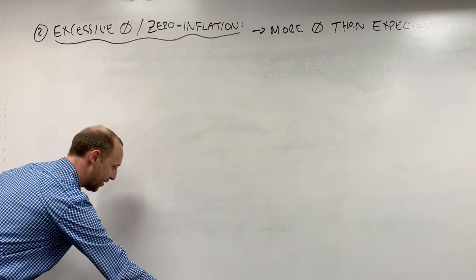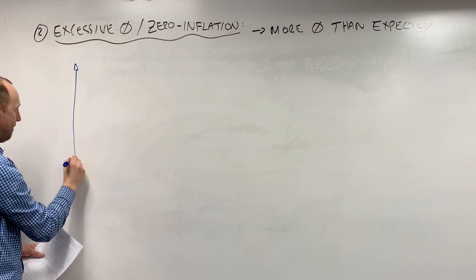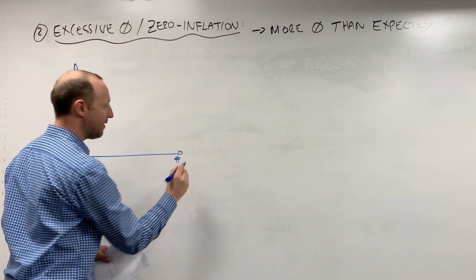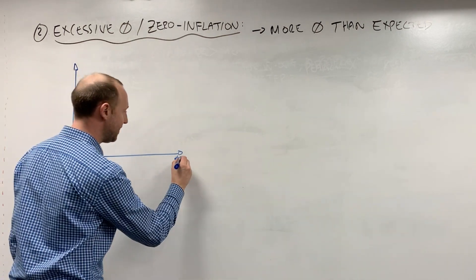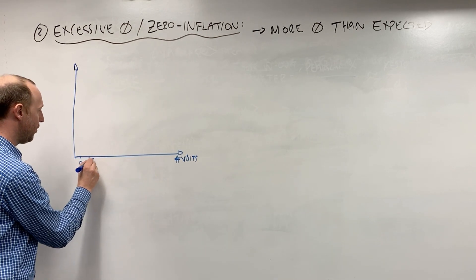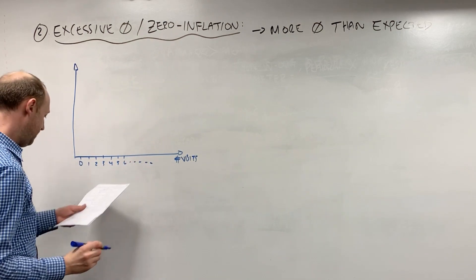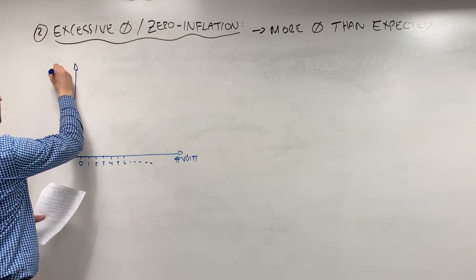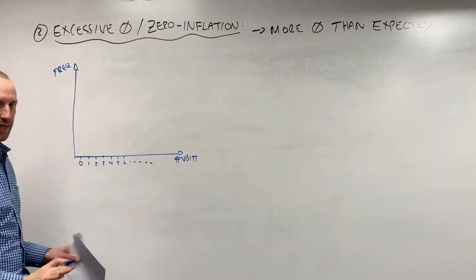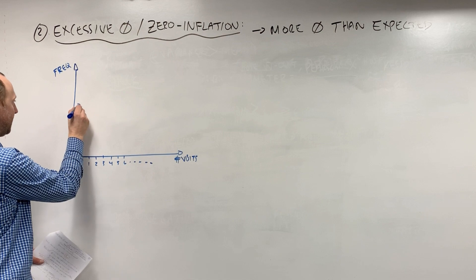To try and draw a picture of what that would look like, let's think of the number of visits to a physician in a year, so that's the example we've been looking at. So the number of visits are zero, or one, or two, or three, or four, and so on. And on this axis is the frequency. For a nice theoretical Poisson distribution, we'd expect to see something like this.